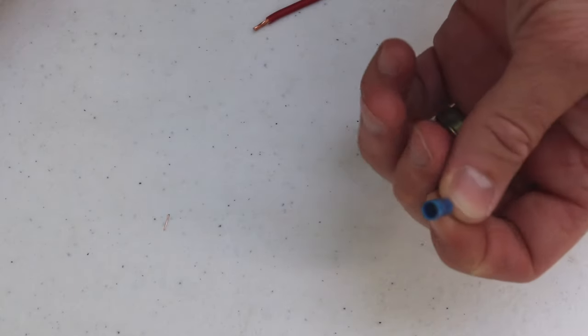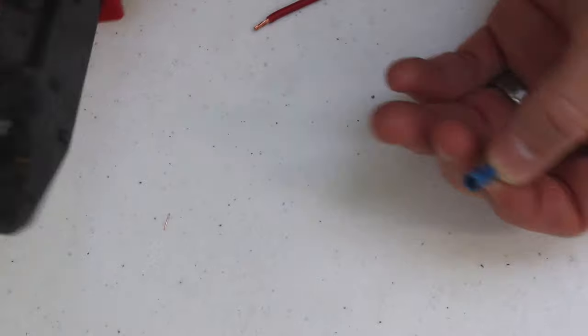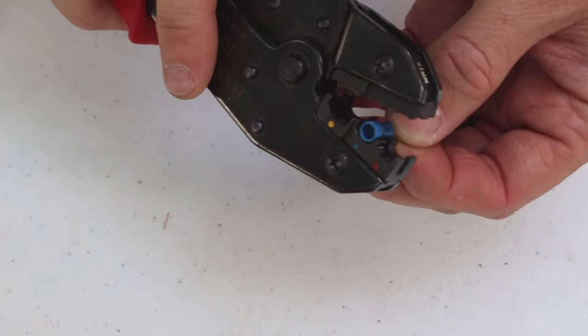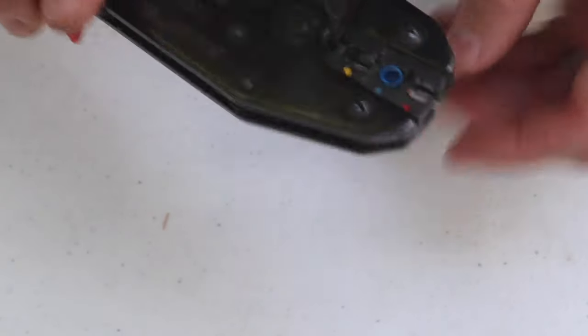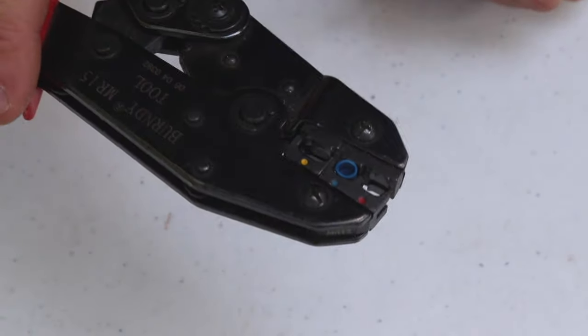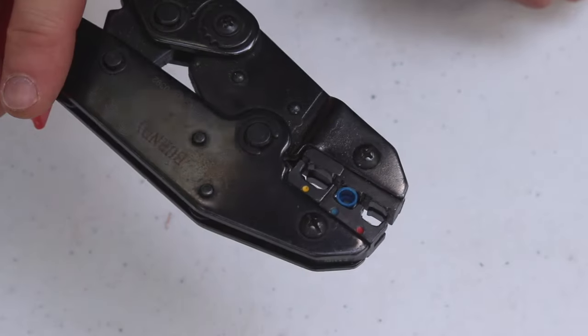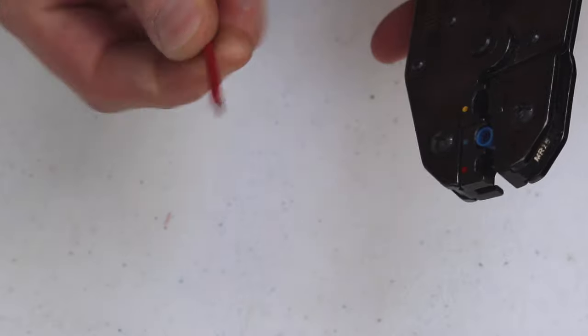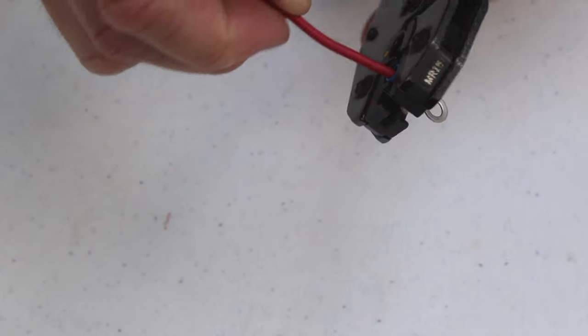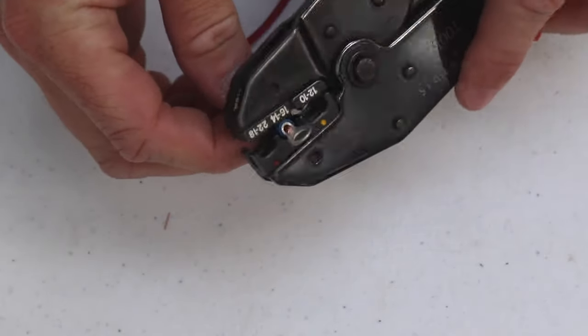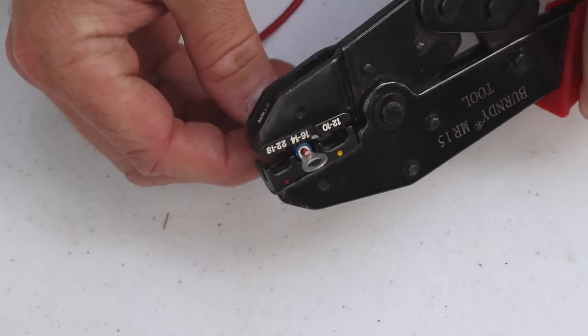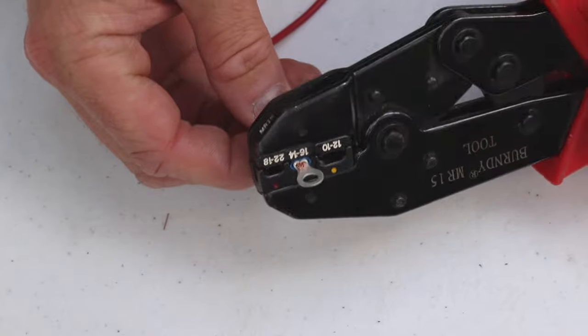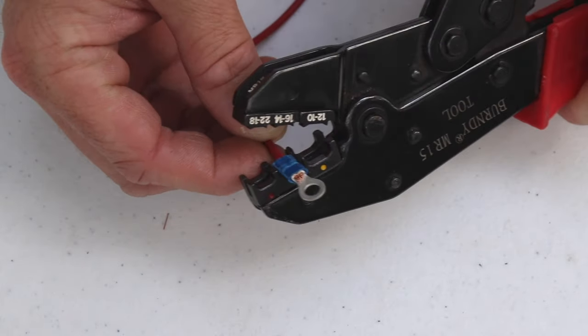Take your connector in one hand and your crimper in the other hand and place the connector in the appropriate groove and just apply one click, just enough to hold the connector in place. You would next take your wire and insert it. You can see how it's sticking through just like we're supposed to, and then squeeze your crimper all the way to the end until it releases.